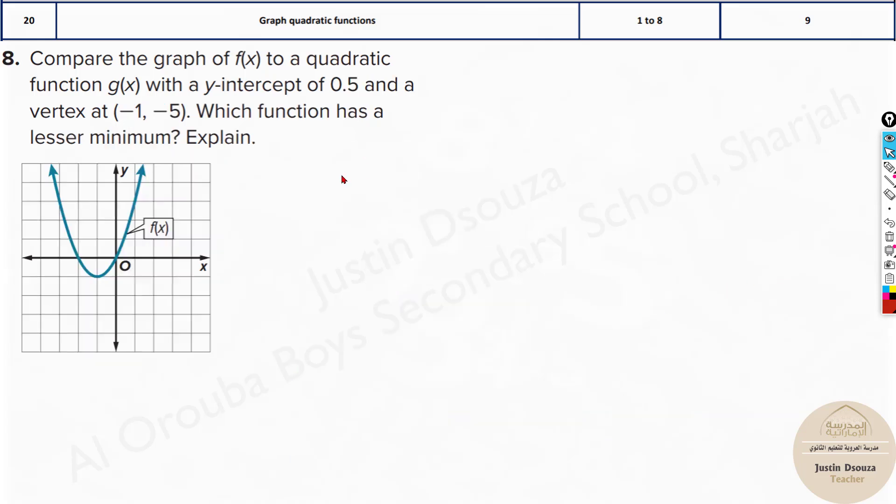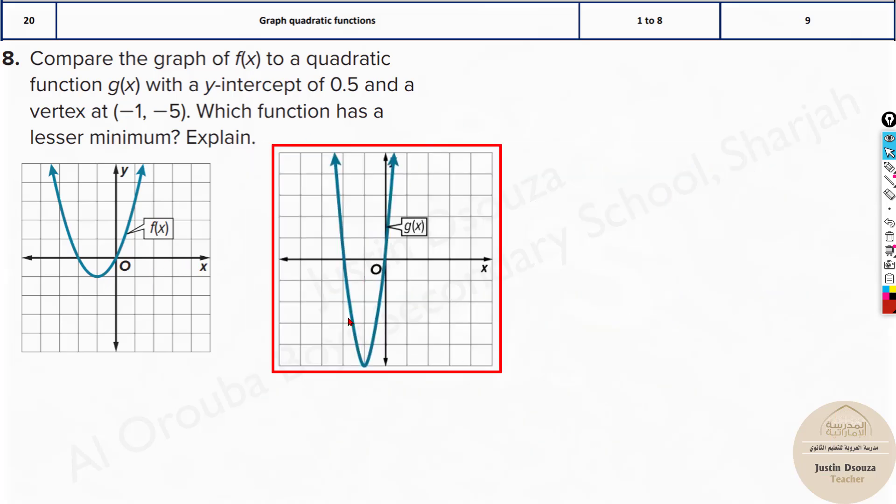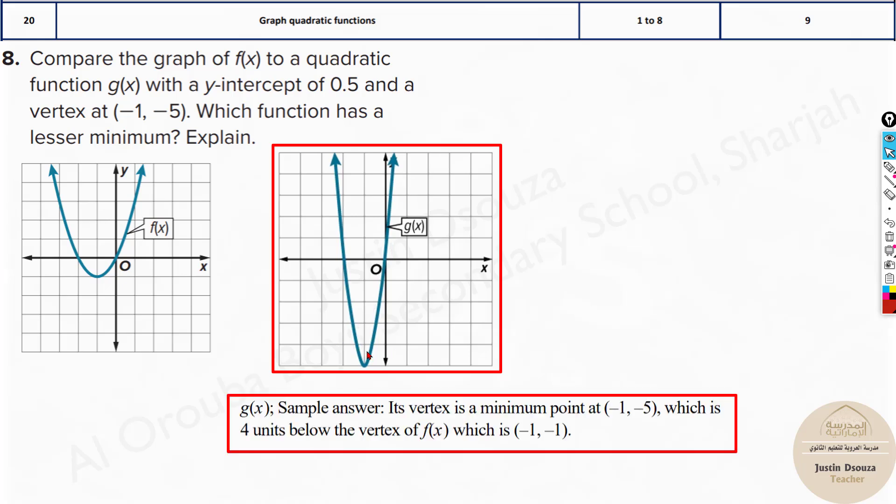Similarly, we have one more function. Please do this by yourselves, but over here, it's not maximum, it's minimum because they're opening upwards. Here we have everything: y-intercept is given, the vertex is given. Please first graph the other one. See, this is the graph. And then you can tell which is having minimum, the function g(x). You can compare it and write it out.